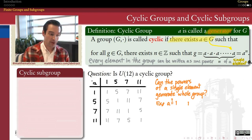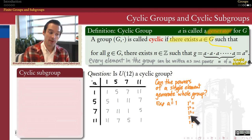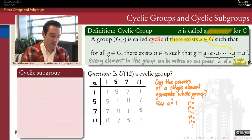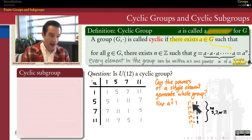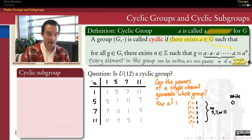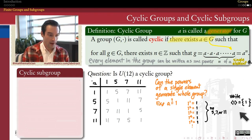Let's start with 1. The powers of 1 — meaning 1 multiplied by itself mod 12 repeatedly — are all equal to 1, even as integers. So the powers of the element 1 in this set only account for one of the elements. We don't see 5, 7, or 11; there's no power of 1 equal to any of those three. So the set of powers of 1 is just {1}, meaning 1 is not a generator for this group.